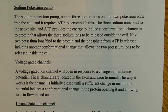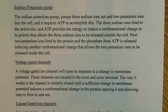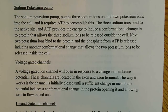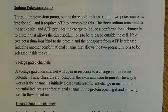The three sodium ions bind to the active site of this membrane-bound protein. The ATP provides energy to induce a conformational change in the protein, allowing the three sodium ions to be released outside the cell. Then the two potassium ions bind to specific binding sites on the protein, and the phosphate from the ATP is released, inducing another conformational change that allows the two potassium ions to be released inside the cell. This relates to the conformational changes we've discussed in previous biochemistry lectures.